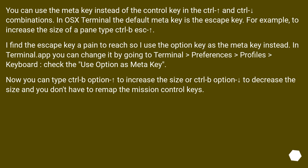You can use the Meta key instead of the Control key in the Control+Arrow combinations. In OS X Terminal the default meta key is the Escape key — for example, to increase the size of a pane type Control+B then Escape. I find the Escape key a pain to reach, so I use the Option key as the Meta key instead. In Terminal.app you can change it by going to Terminal > Preferences > Profiles > Keyboard and checking 'Use Option as Meta Key'. Now you can type Control+B Option+Arrow to resize panes and you don't have to remap the Mission Control keys.